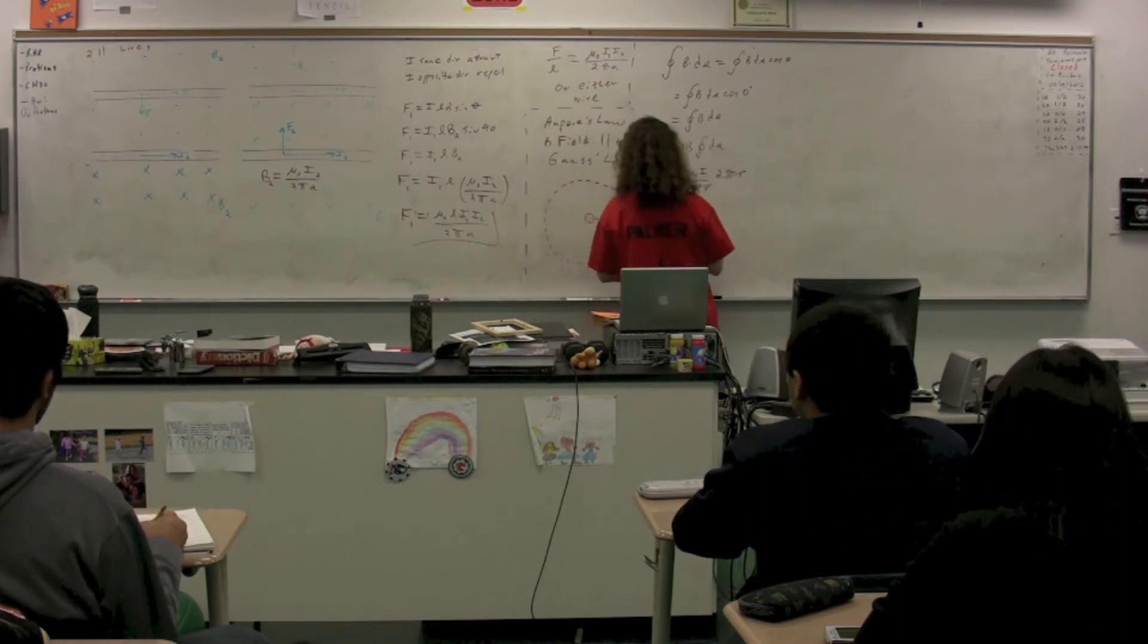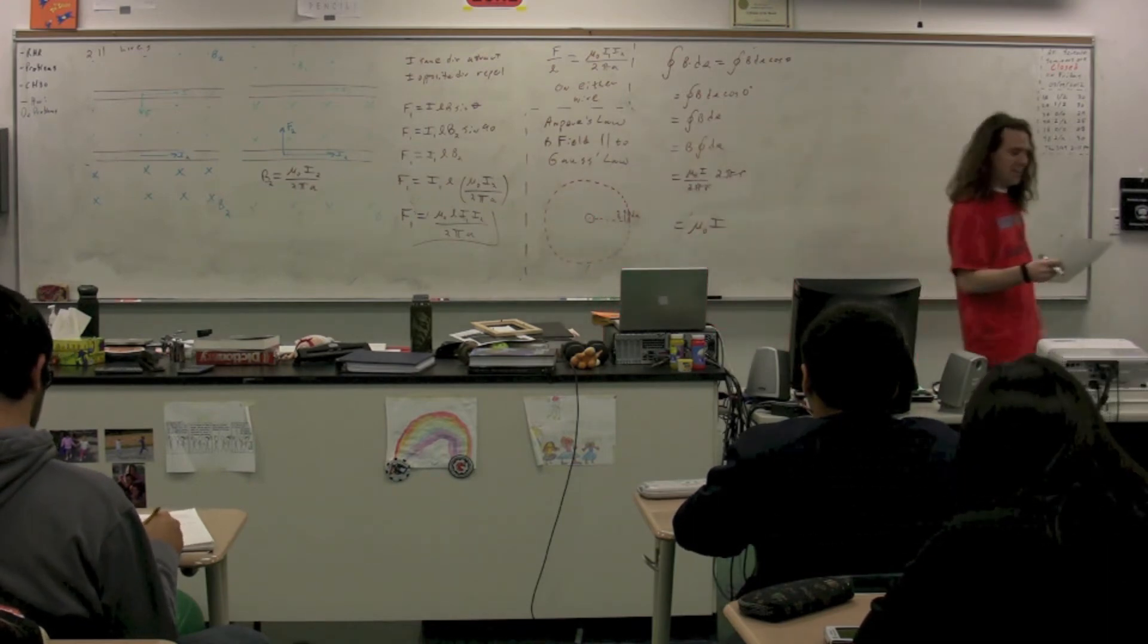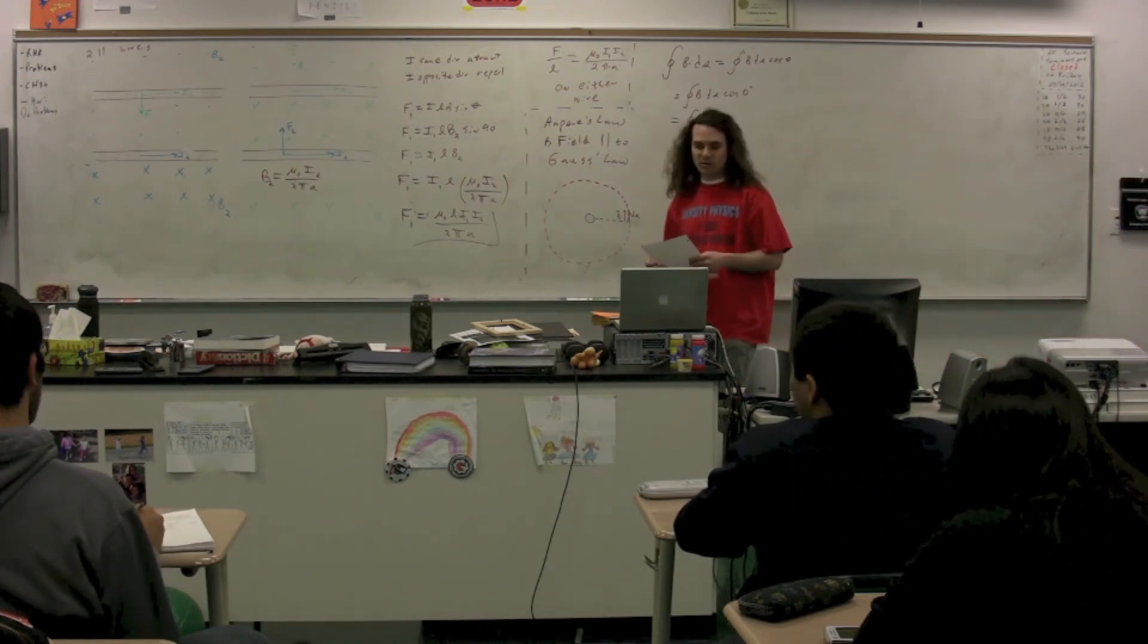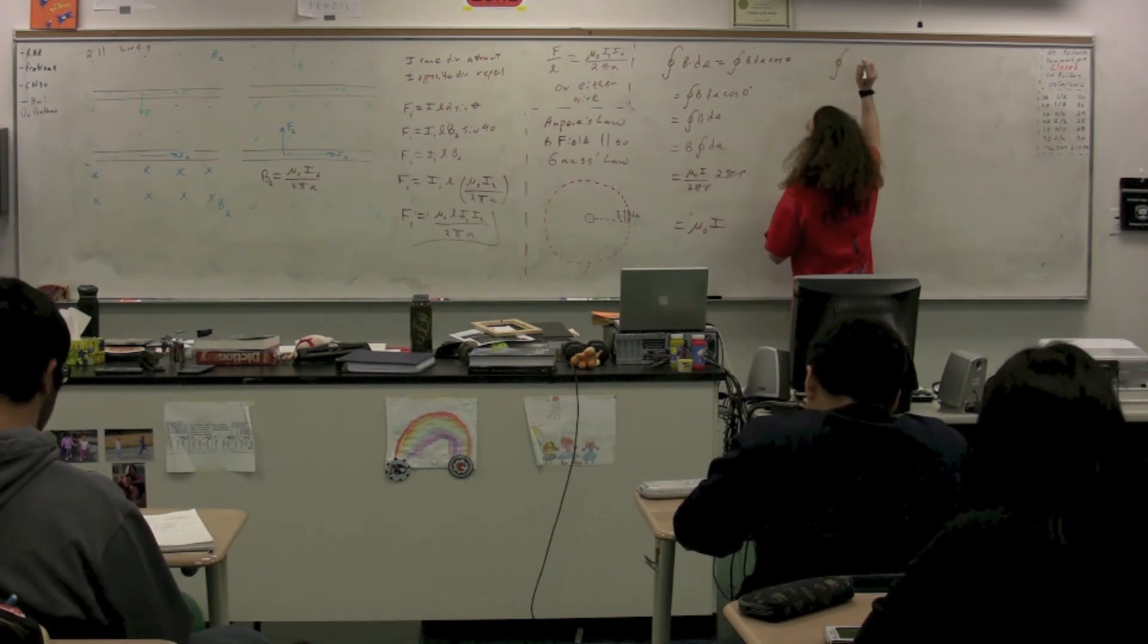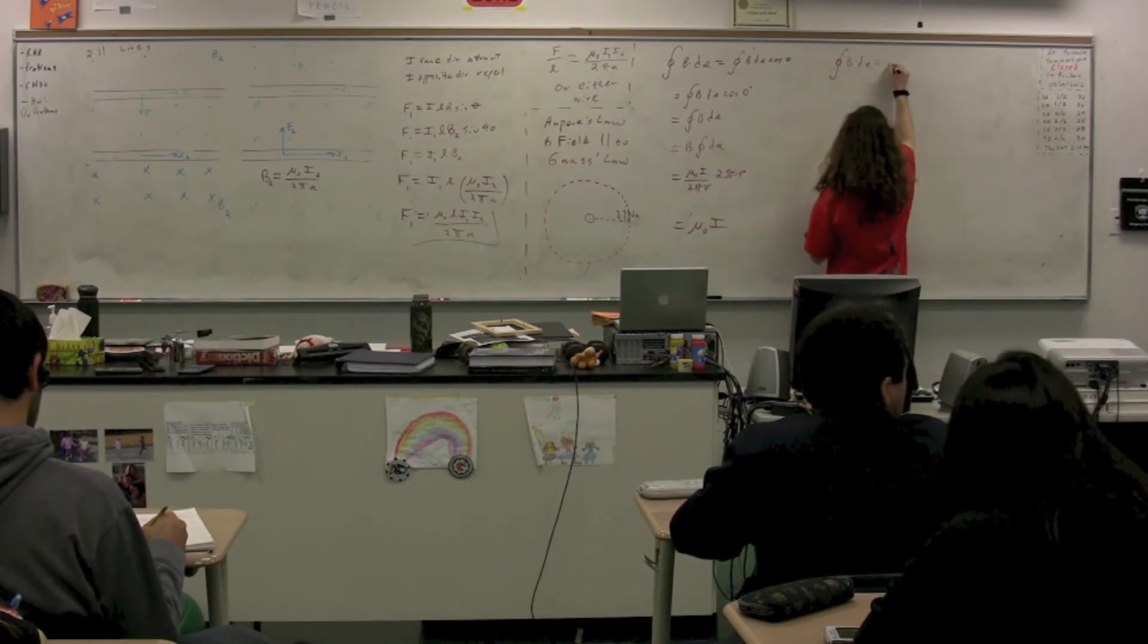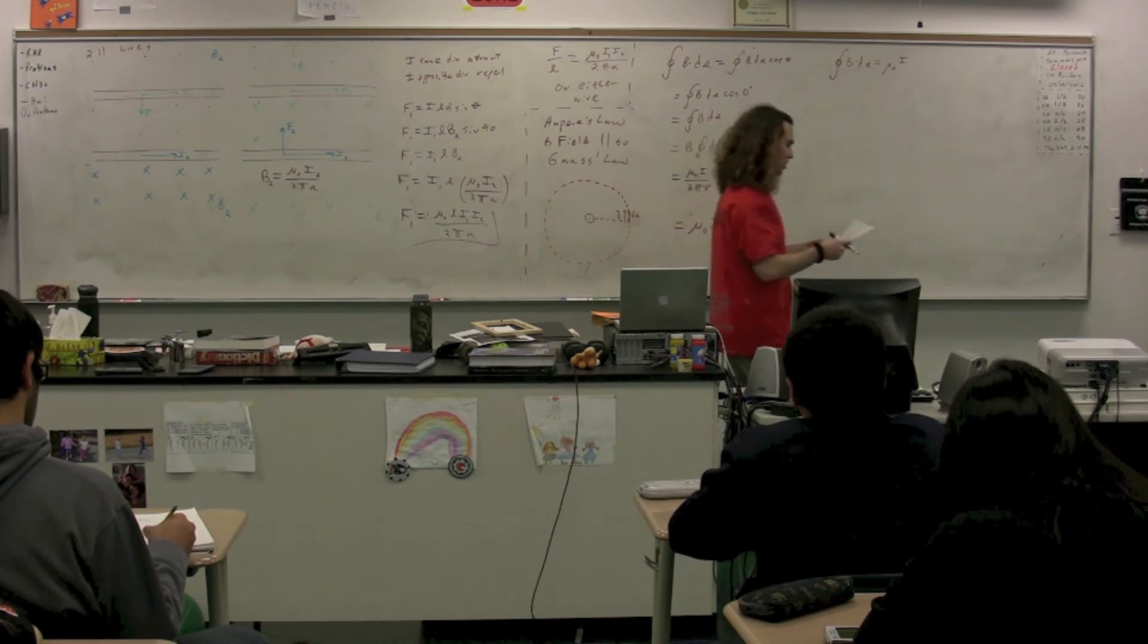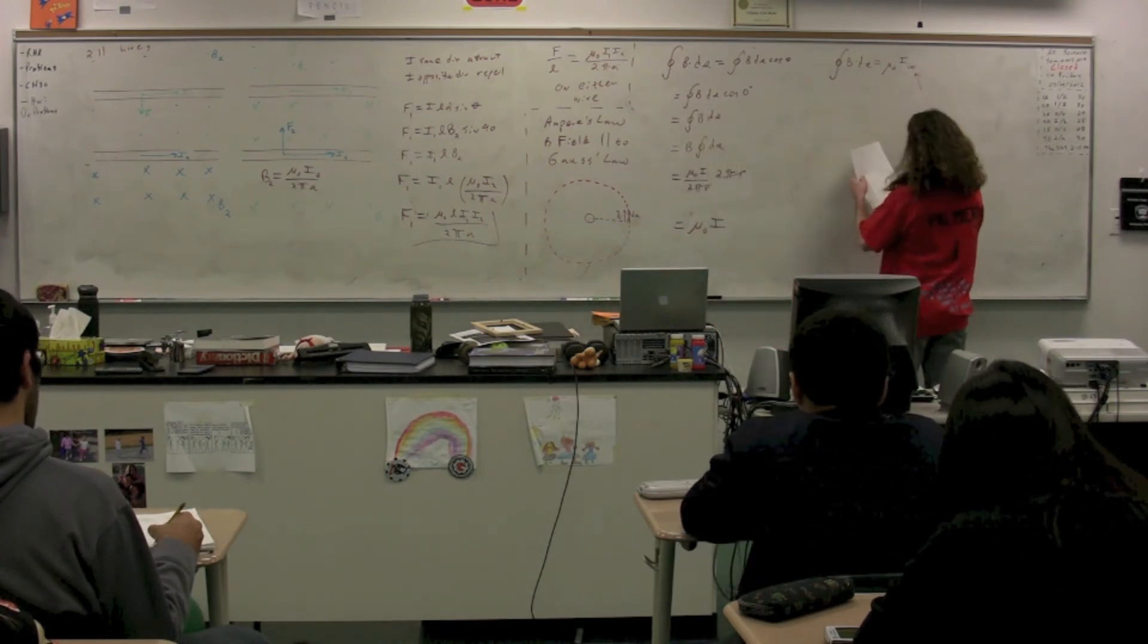Oh, come on! Pardon the interruption. The owner of a silver sedan parked in the bus lot, you need to move your vehicle immediately. The owner of a silver sedan parked in the bus lot, move your vehicle immediately. Thank you. In other words, Ampere's law states that the closed loop integral of B dot ds is equal to mu naught times i, where i is the current inside the Amperian loop.